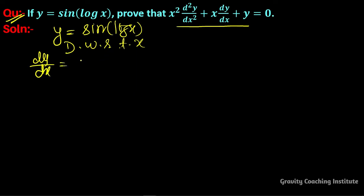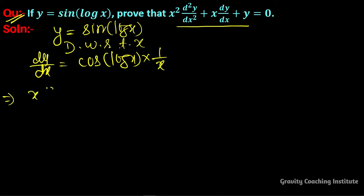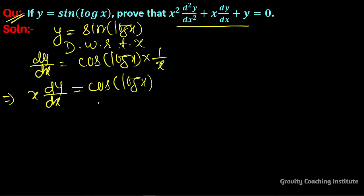Using the chain rule, sin gives cos(log x), and the derivative of log x gives 1/x. Taking x to the left side and multiplying, we get x(dy/dx) equals cos(log x).